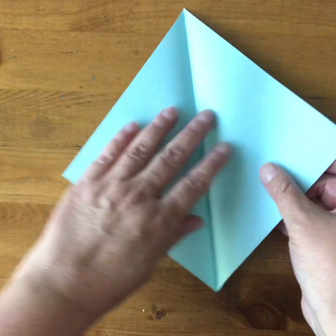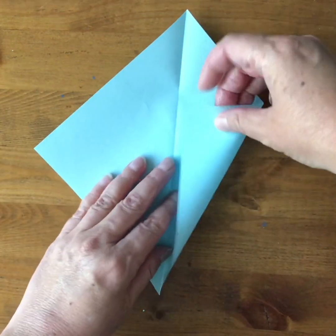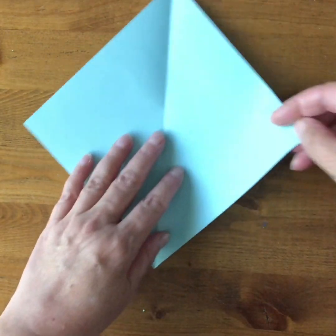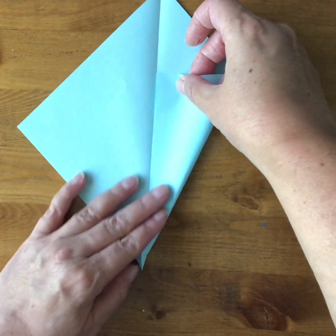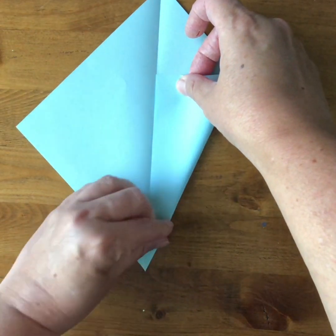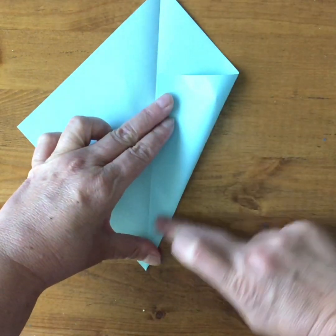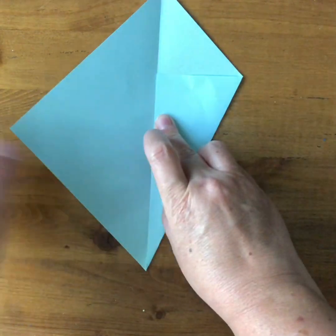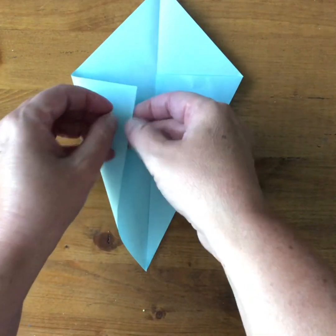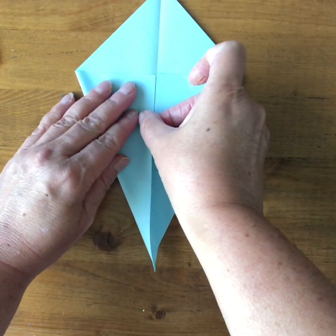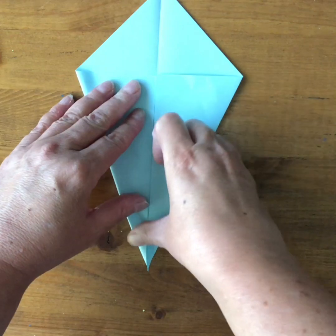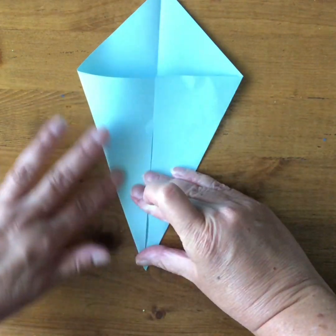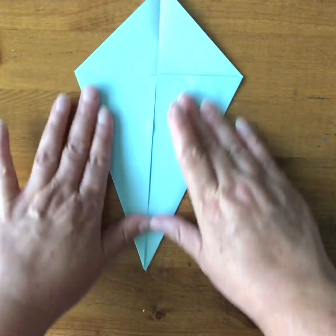Open it up and do your kite fold. So this outside corner into the center and along the crease. I've made another triangle here and then I do the same on this side so it's symmetrical. Line it up against the middle and then crease it. And there's my kite.